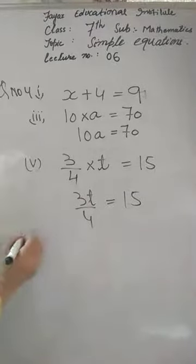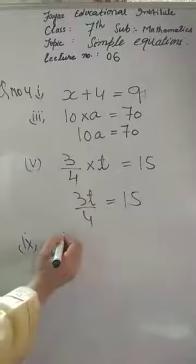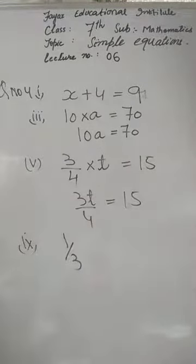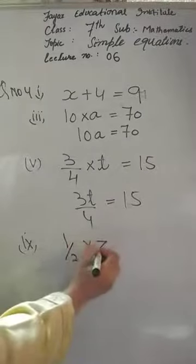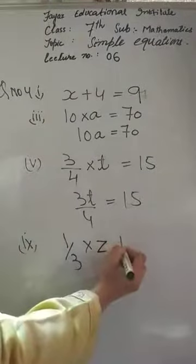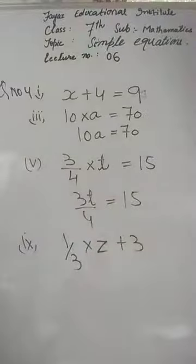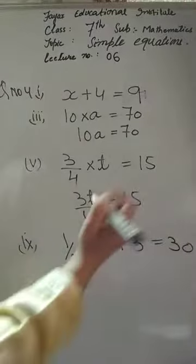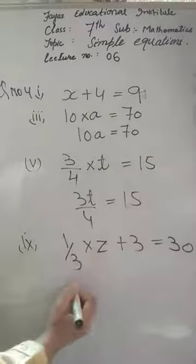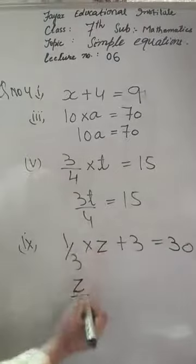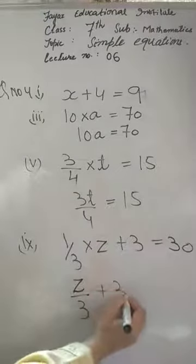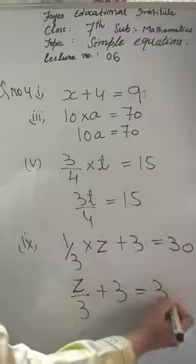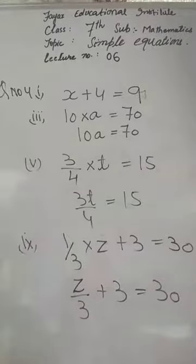Now let's see the ninth part: If you add 3 to 1 third of z — 1 third means 1 by 3, of means into z (z is the variable) — plus add 3 — you get 30, meaning is equal to 30. So z by 3 plus 3 is equal to 30. This is how we change a statement into an equation.